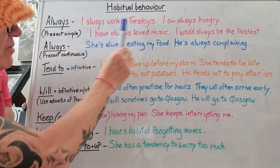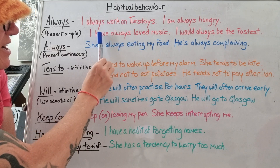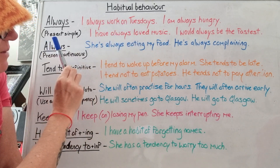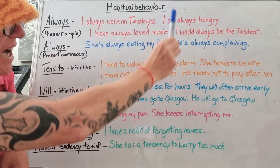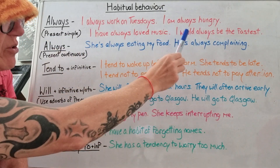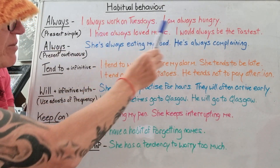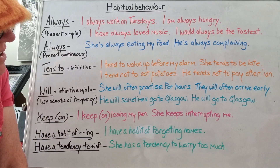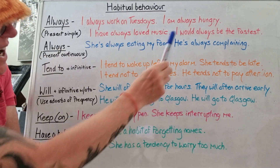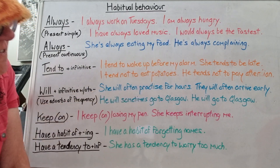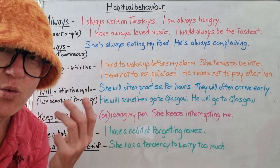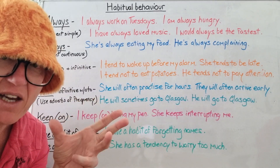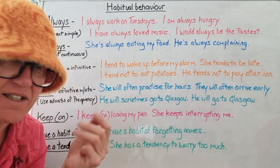This is what I call the adverb sandwich: verb here, verb here, adverb in the middle — just like a sandwich. I would always be the fastest. Modal verbs and auxiliary verbs follow the same rule regarding position in these sentences. This is like saying, in general, when I was young, every time I raced, I would always be the fastest.